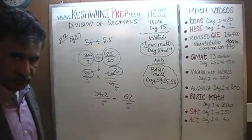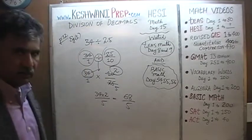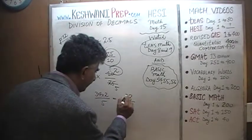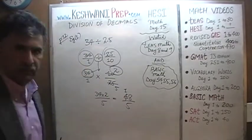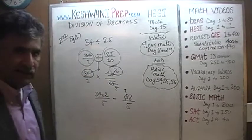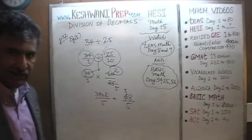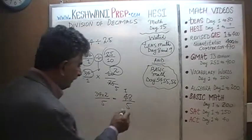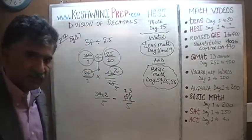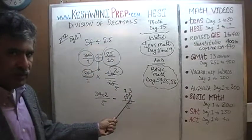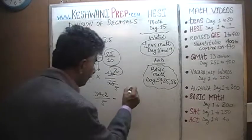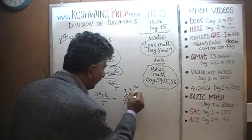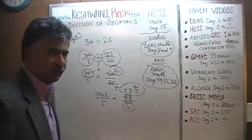Now we divide 68 by 5. 6 has only one 5, and the remaining 1 joins the 8 to become 18. 18 has three 5s — three 5s are 15 — so out of 18 we used 15, and we have a remainder of 3. That remainder of 3 needs to be divided by 5, because we're dividing everything by 5. So the answer is 13 and 3 fifths.